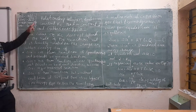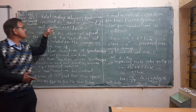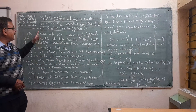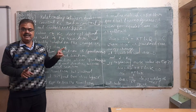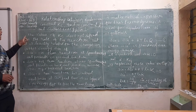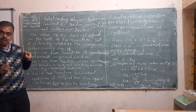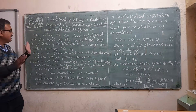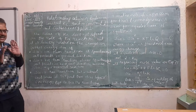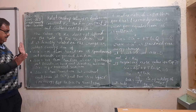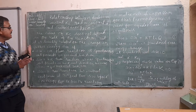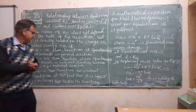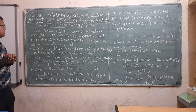Today we will learn about the relationship between equilibrium constant Kc, reaction quotient Q, and Gibbs energy G. It is a very important relationship. The value of Kc, the equilibrium constant, does not depend upon the rate of the reaction, but it also depends upon the change in Gibbs energy delta G for the reaction. This is the thermodynamic view of the reaction.